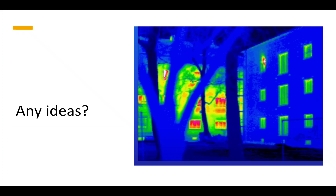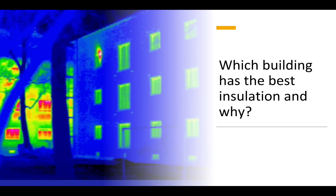Any ideas what's happening here? So we've got two buildings, and this building on the right looks vastly different to this building on the left. If you've got any ideas why, you might want to take a pause and write them down. The question is: which building has the best insulation? Is it the building on the right, or the building on the left? And why?